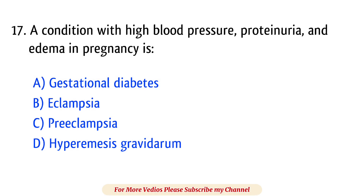Question number 17. A condition with high blood pressure, proteinuria, and edema in pregnancy is? The right answer is option C: Pre-eclampsia.